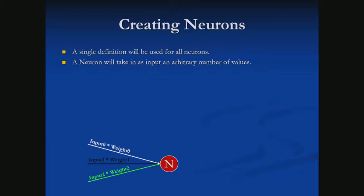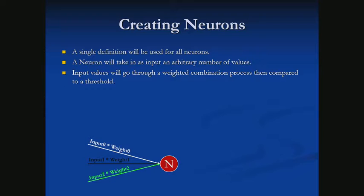Each neuron takes in all its inputs — as represented by our dendrites in real neurons — and for each input, we weight that value. Input 0 gets multiplied by weight 0; input 1 gets multiplied by weight 1. The weights are functioning as our synapses, controlling the signal strength of a given input.